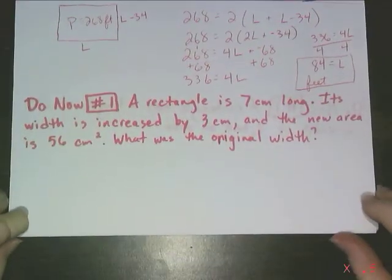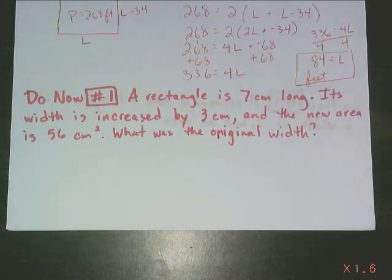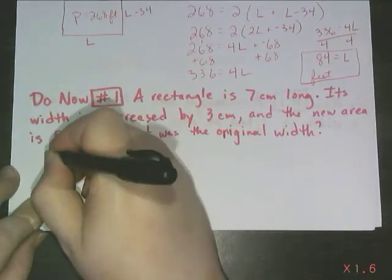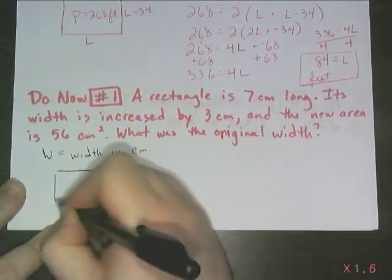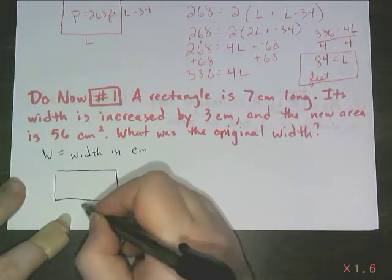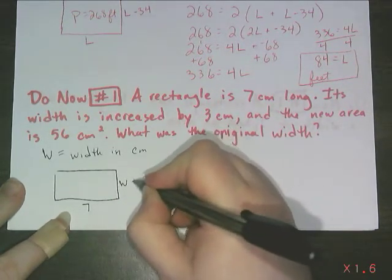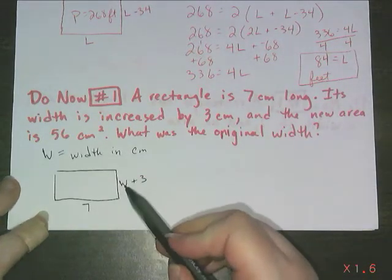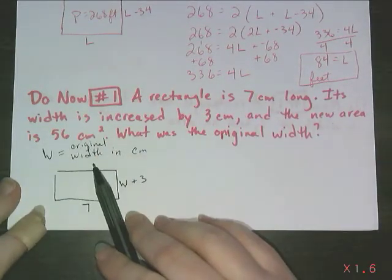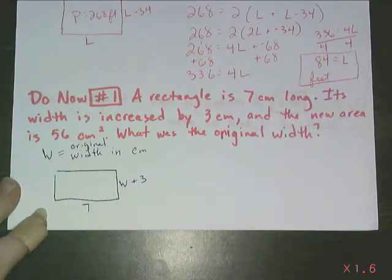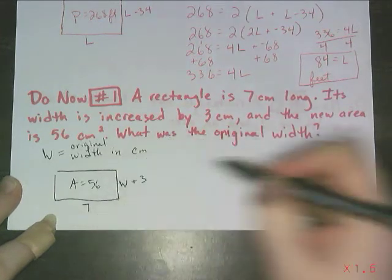Your turn. Do now number 1. A rectangle is 7 centimeters long. Its width is increased by 3 centimeters. And the new area is 56 square centimeters. What was the original width? Let's see how you did. So I'm looking for the width. I'm going to define that. W is the width in centimeters. When I draw my rectangle, it's 7 centimeters long. The original width was 3. Now notice, I just said the original width. I realize I really should be more specific in my variable definition. W is the original width. That's what we're looking for, after all. The width of this rectangle is W plus 3. And I know the area is 56 square centimeters.